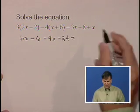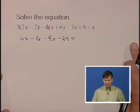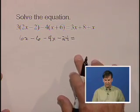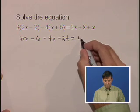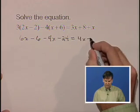On the right-hand side, we don't have any parentheses to distribute, so we will go ahead and collect like terms. The 3x and the x are like terms, so that is 4x plus 8.